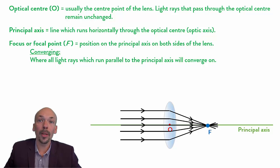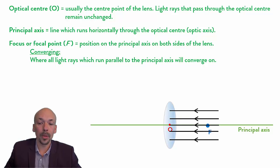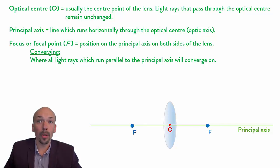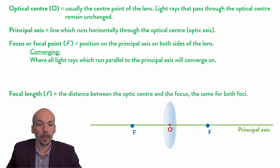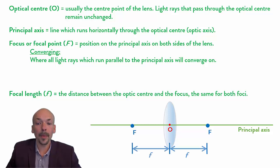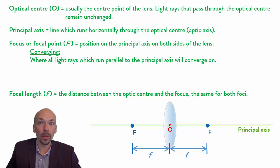We can also find the focus on the other side of the lens. So now the light rays will go from right to left, and they will again converge into one single point, which we also mark with the capital F. Now we can determine the focal length, marked with a lower case f. This is the distance between the optic center and one of the foci — so it's either this distance or this one — and they're both equal in all cases. So if the right one is 10 centimeters, then the left one is also 10 centimeters.